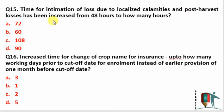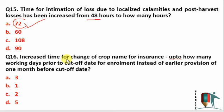Again from Pradhan Mantri Fasal Bima Yojana: the time for intimation of loss due to localized calamity and post-harvest losses has been increased from 48 hours to 72 hours. You can now inform the concerned authorities within 72 hours of loss due to local calamity or post-harvest losses. Earlier it was 48 hours; it has been increased to 72 hours. The window for changing the crop name for insurance has been reduced to two working days, down from one month.